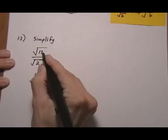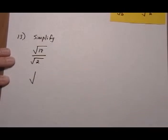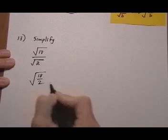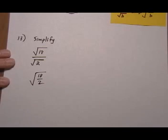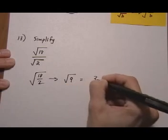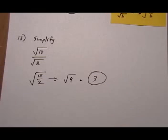So let's go ahead and rewrite √18/√2 under one radical. That gives us √9, which is 3. And that would be the answer.